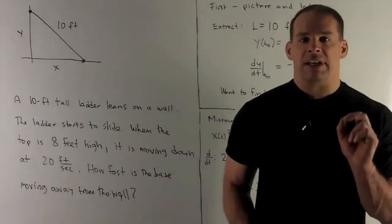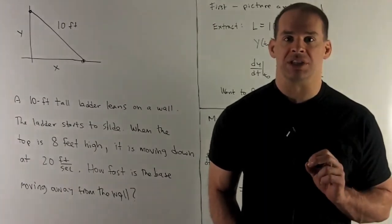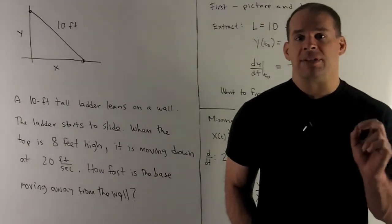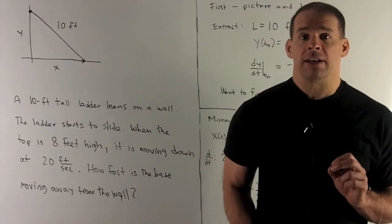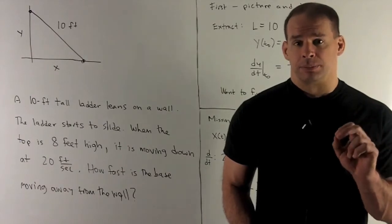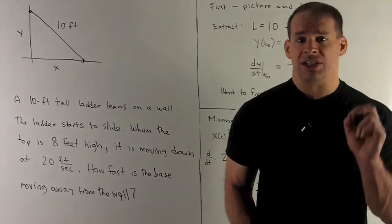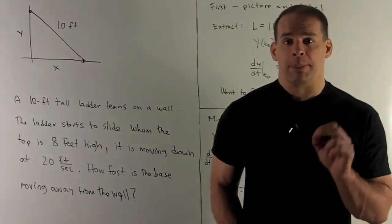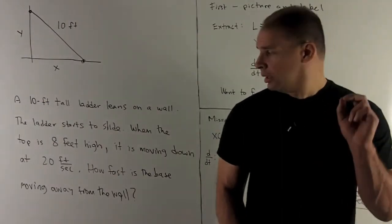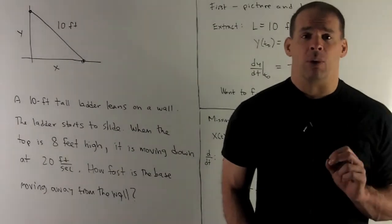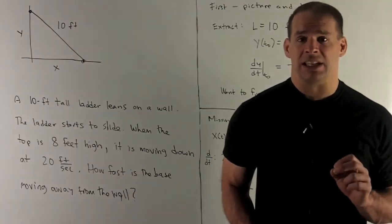Next, the ladder is 8 feet high at the time where I'm taking our snapshot — we can call that t0 for bookkeeping purposes, though we're never actually going to use t0. That means y(t0) equals 8 feet. Sliding down at 20 feet per second — that's just going to mean dy/dt. We have dy/dt at t0 equals minus 20 feet per second, because it's moving down. How fast is the base of the ladder moving away from the wall? That's going to be dx/dt evaluated at t0.